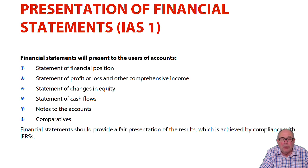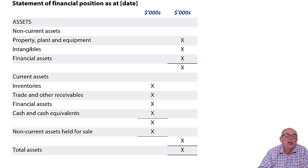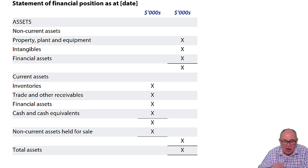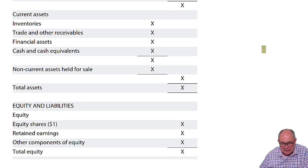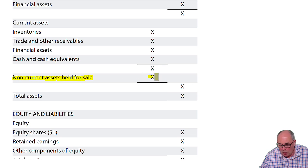You can see that when you look through this chapter, we can see an example of a statement of financial position. By now you are, I'm sure, familiar with things like the positioning of non-current and current assets and so on. The only thing I'd highlight from that statement of financial position is one little line within current assets: non-current assets held for sale.